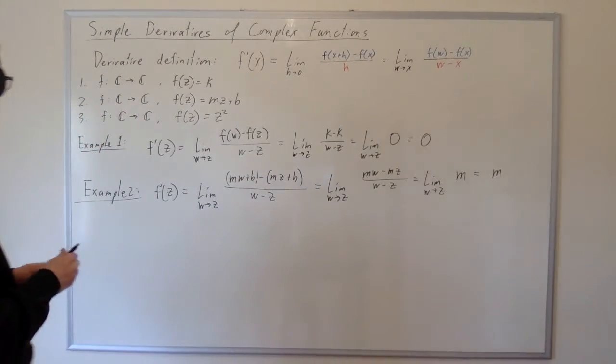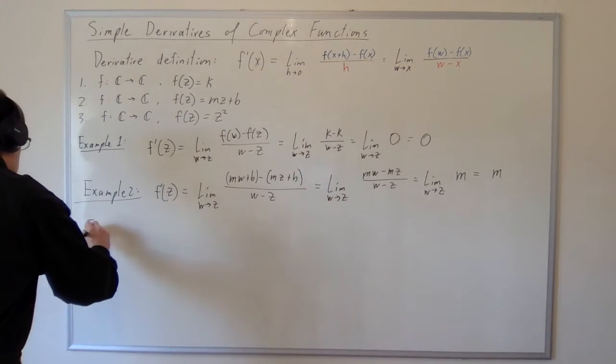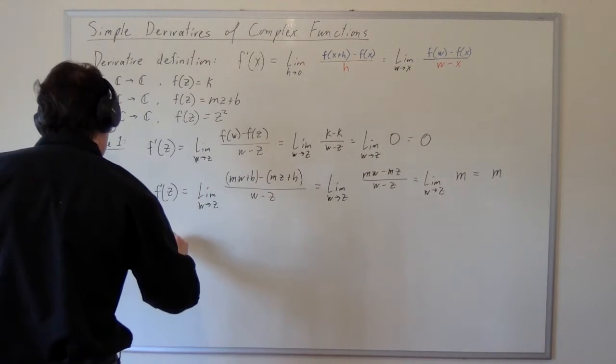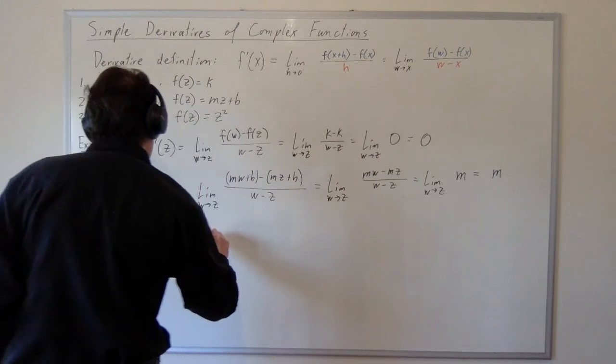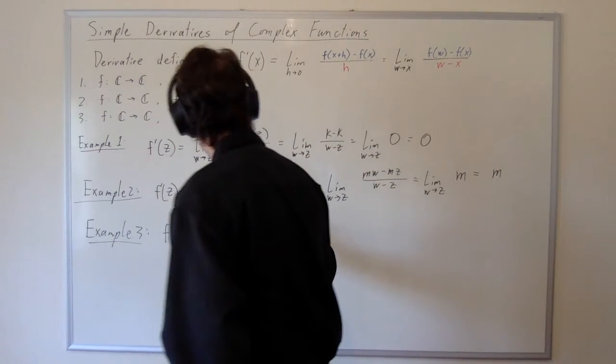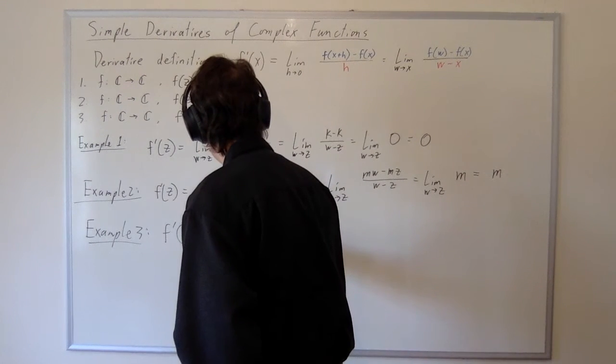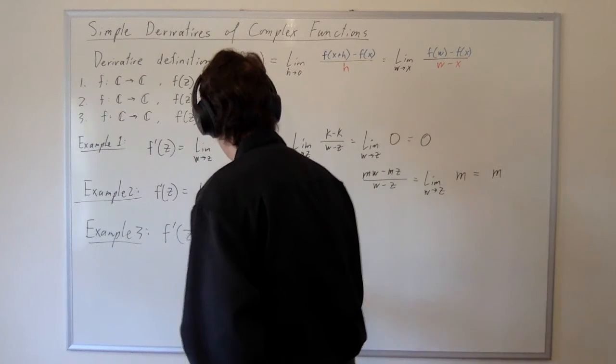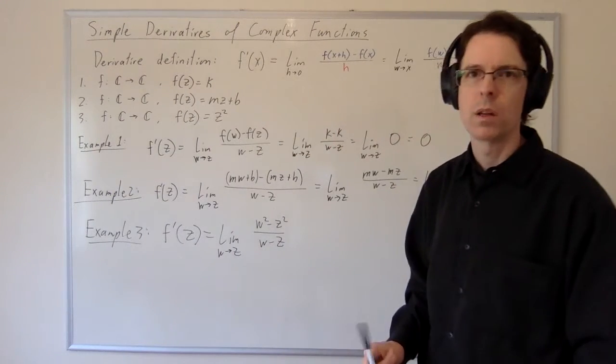For the third example, we're going to calculate the derivative of the parabola. f prime of z is the limit as w approaches z of w squared minus z squared over w minus z. And now perhaps this is working out a little bit better than in a standard calc 1 course.